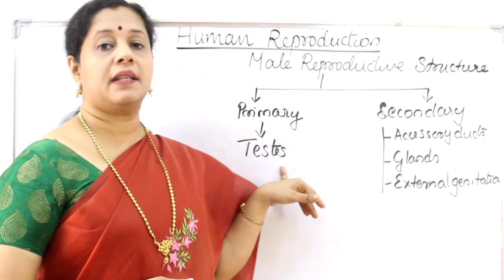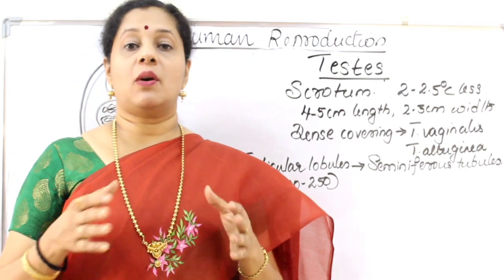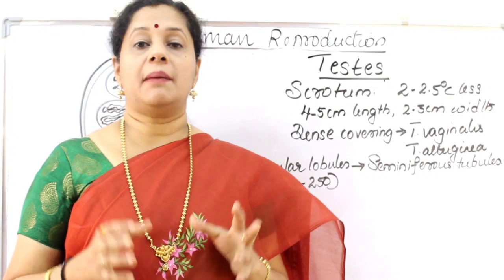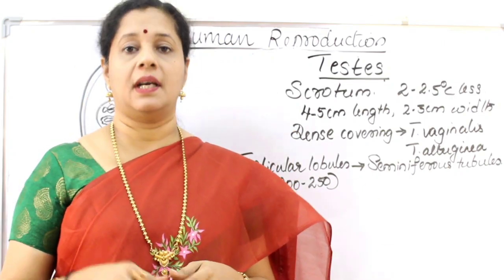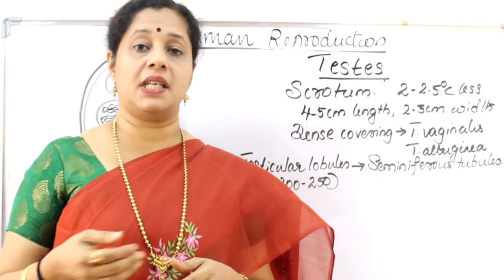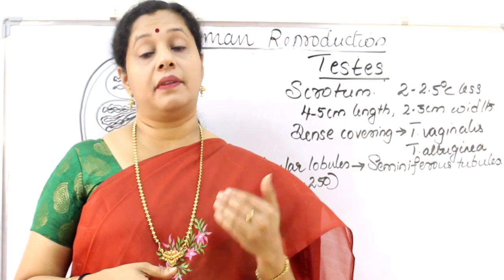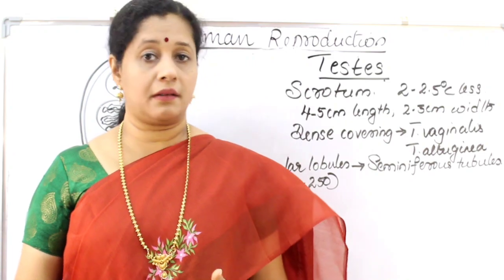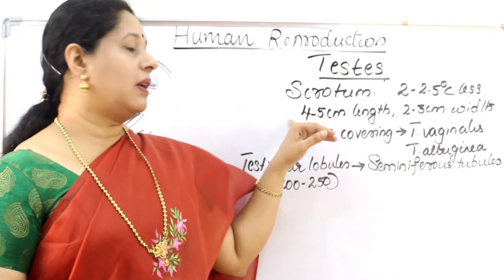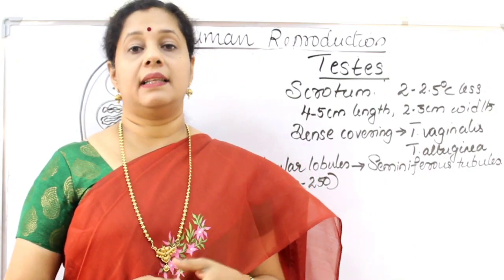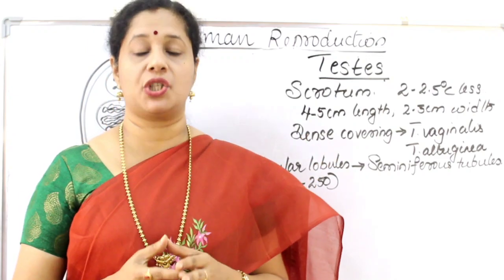Let's look at the structure of the testis. The testis is positioned outside the abdominal cavity, kept within a bag of skin called the scrotum. The scrotum maintains a temperature 2 to 2.5 degrees Celsius less than the body temperature, which is required for the production of sperms. The testis remains within the abdominal cavity when the baby is in the mother's womb, and after the 8th month or immediately after birth it descends into the scrotum. If the testis does not descend, sperm formation will not happen because spermatogenesis is not possible at higher body temperature. The testis is 4 to 5 cm in length and 2 to 3 cm in width, and has a tough covering outside — apart from the scrotum, there is a dense fibrous tissue covering called the tunica.